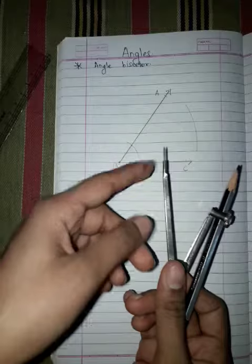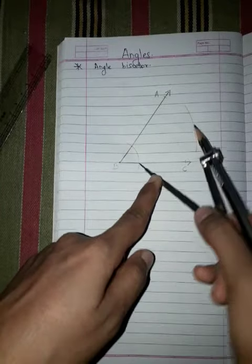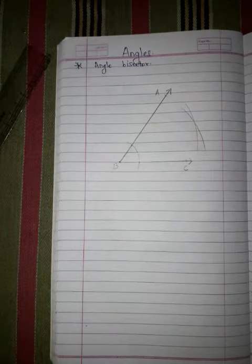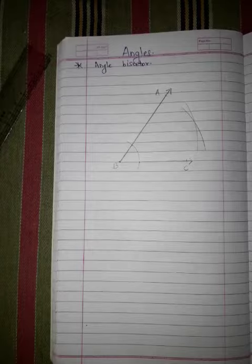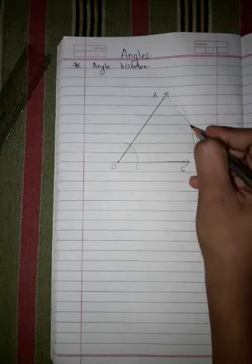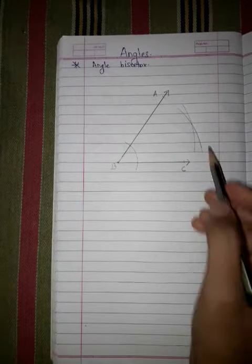Let us place the sharp end at the arc here again, cut the arc. Now we get the intersection of two arcs present over here. Let us consider the point here, we will join this point to point B.